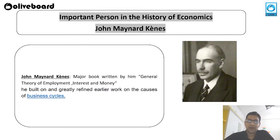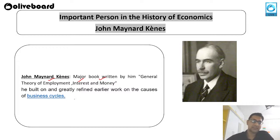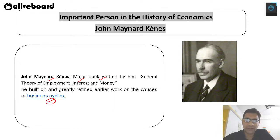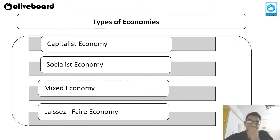The second important person is John Maynard Keynes. He wrote major books on how employment works, how industry works, and how money works. His main contribution to economics is in the field of business cycles — he defined how the business cycle normally works. This is the main work done by John Maynard Keynes. Now we are moving to the next part: types of economies.